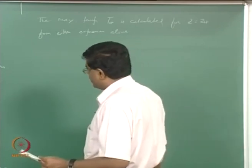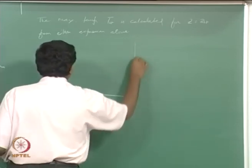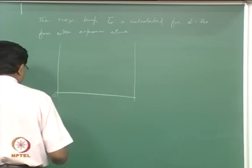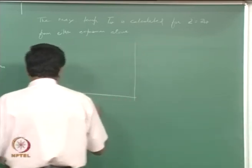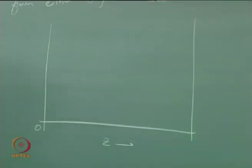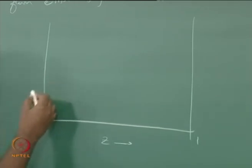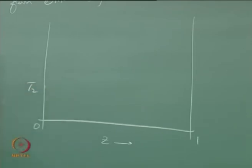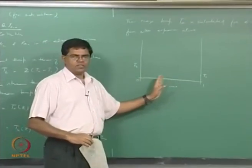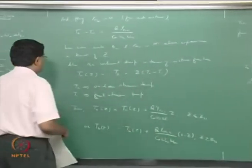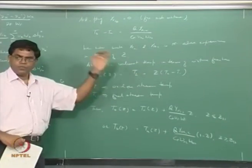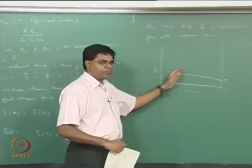Plotting these expressions: with Z along the horizontal axis from 0 (all oxidizer) to 1 (all fuel), the oxidizer stream temperature is T_2 and the fuel stream temperature is T_1. The unburned temperature follows a straight line connecting T_2 and T_1, as it is a linear function of Z.